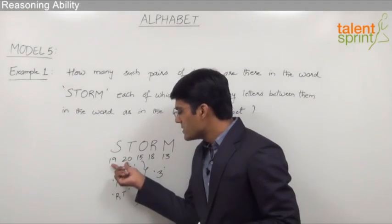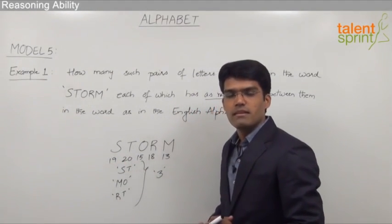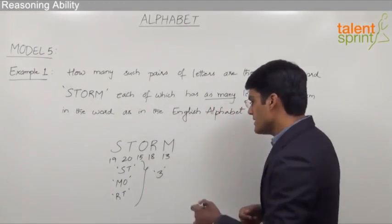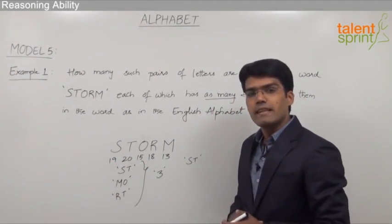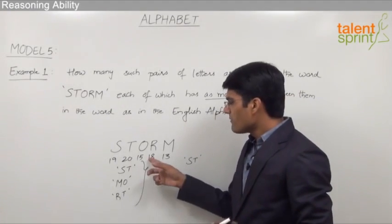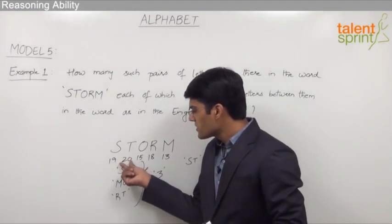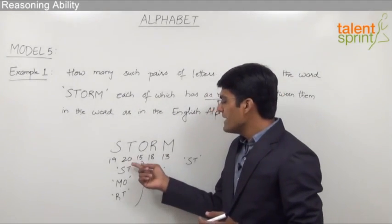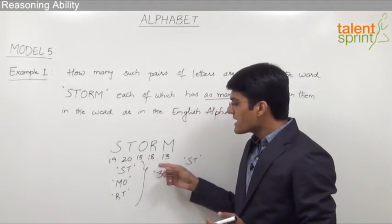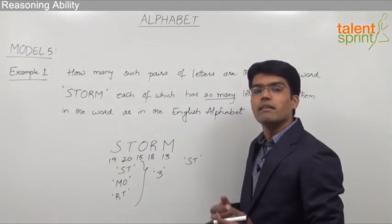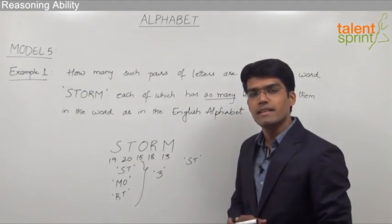Working with numbers is faster than working with letters. When you look at positions 19 and 20, we can take them as a correct pair because they are in order with no gap between them in the given word. So 19 and 20 — that is S and T — is the first pair. Checking 19 with the remaining positions, they are all far away and not in order, so we can leave 19 there. Moving to position 20, it will not form a pair with any remaining positions because all remaining numbers are less than 20.